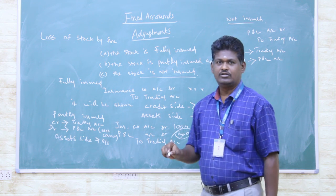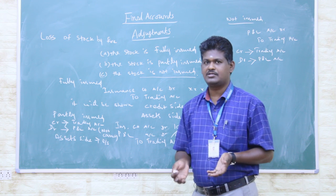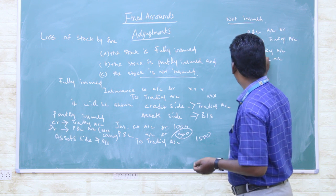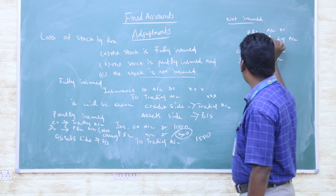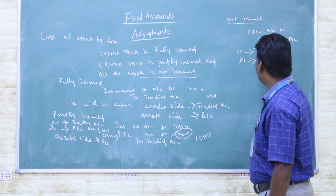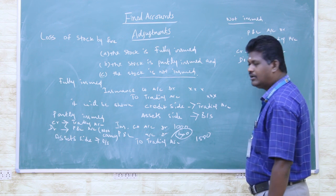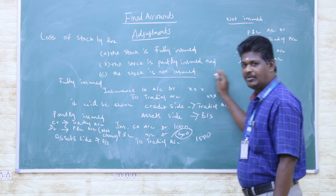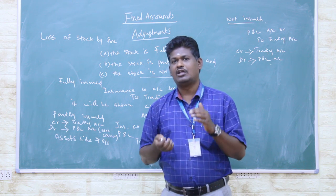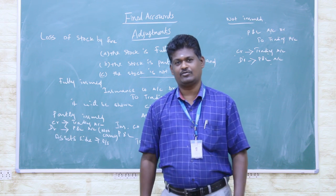The third category: the stock is not insured. So if there is a fire accident, the entire stock will be lost with no insurance coverage. In this situation, the full loss amount is debited to the profit and loss account and credited to the trading account. Thank you.